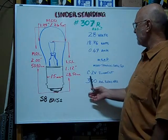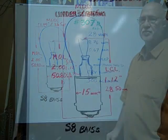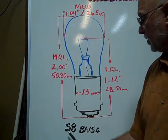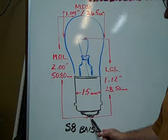The filament type is a C-2V, average rated hours are 300 hours. The S8 BA15S, S signifies single contact.